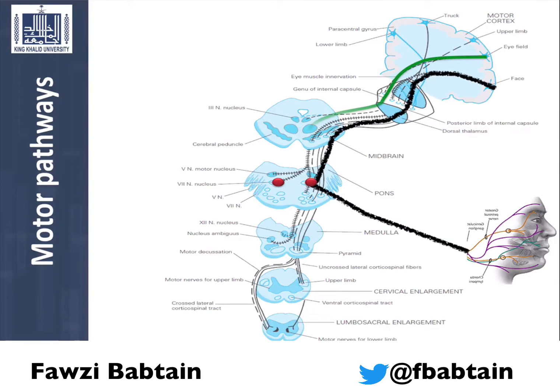The cortical arm fibers will descend down all the way to the lower medulla, where the majority will cross to the contralateral cervical segment of the spinal cord, innervating the upper extremities.